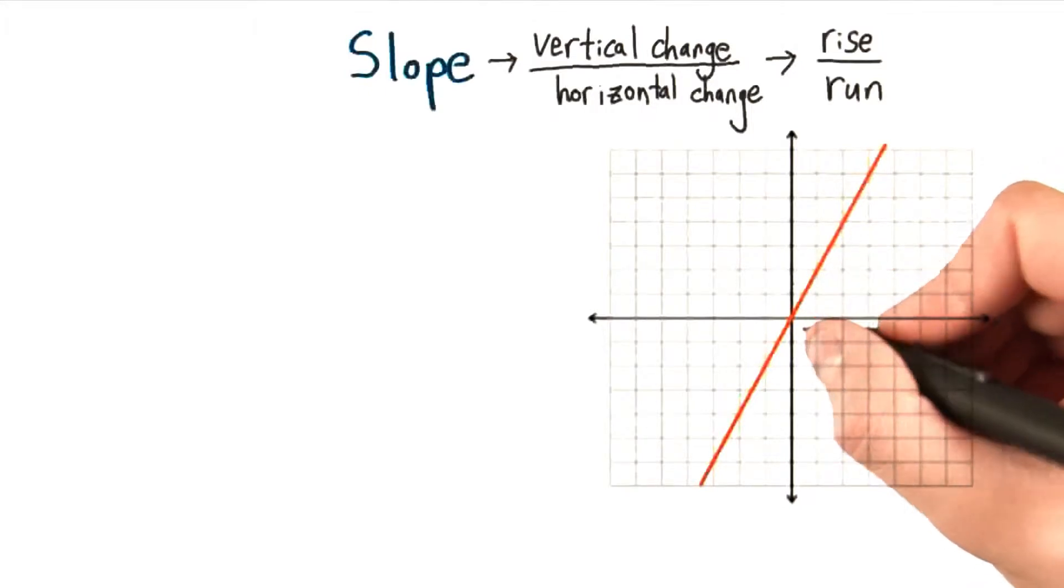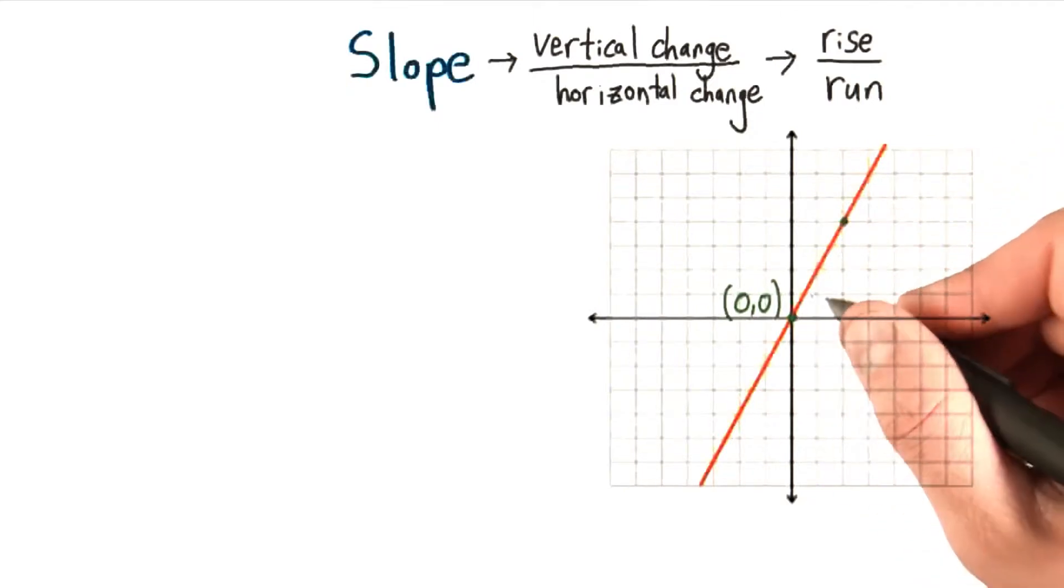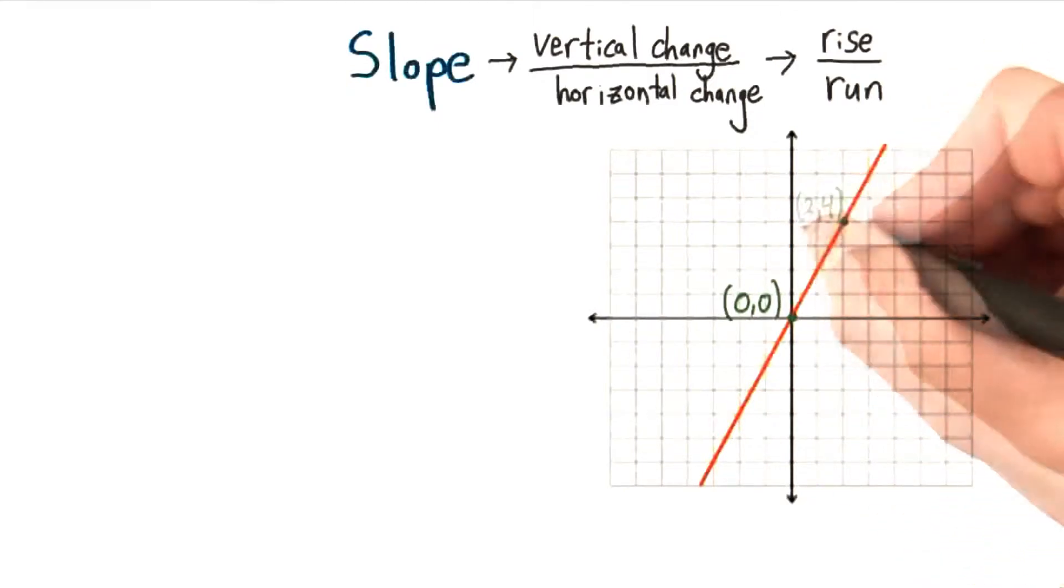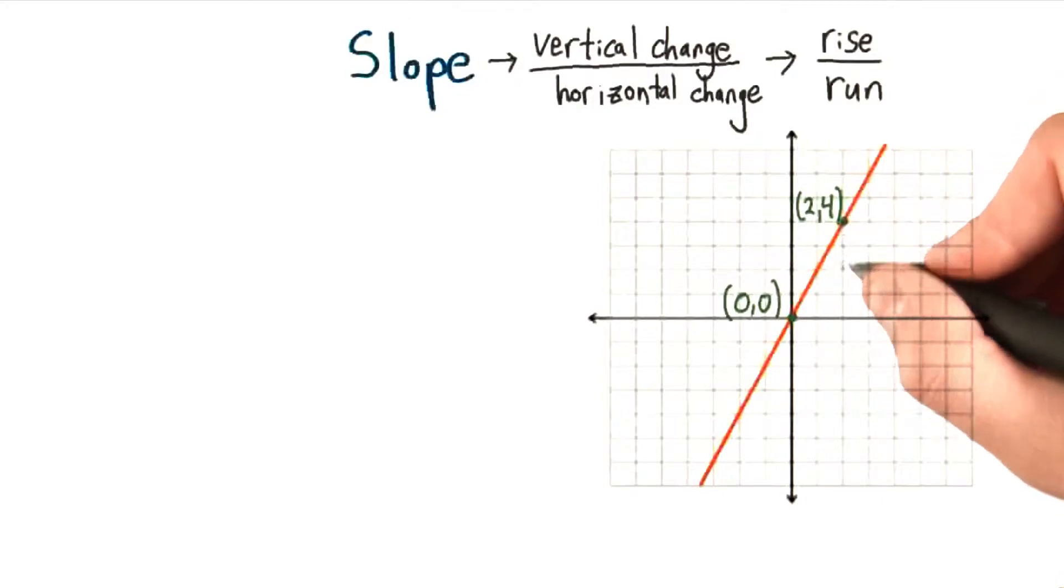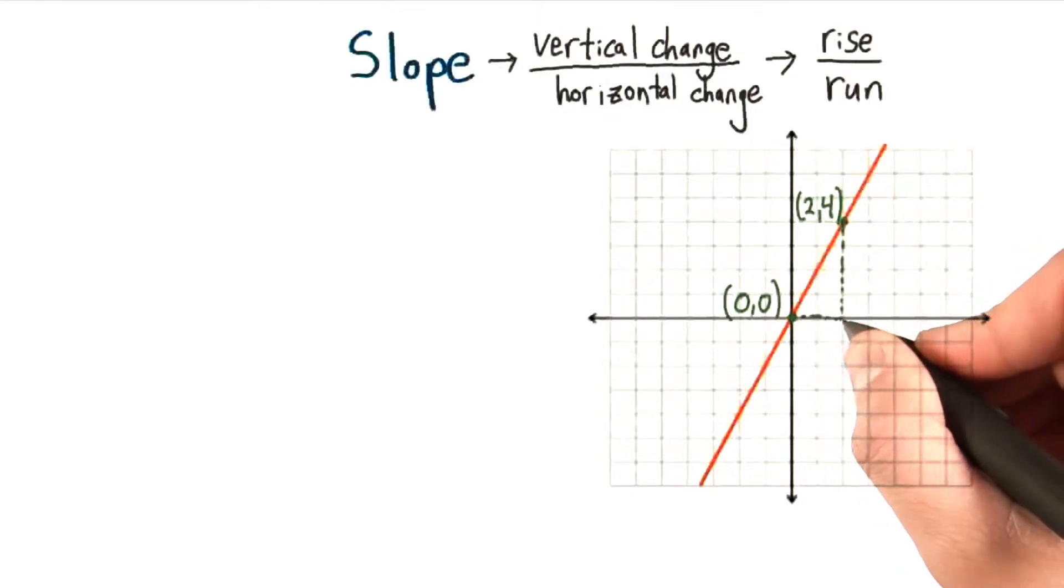If I pick any two points on this line, let's say this one, which is 0,0, and this one, which occurs at 2,4, I can compute the rise over the run of this line. So the rise would be this vertical increase in distance, and the run would be the horizontal increase over here.